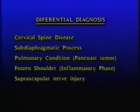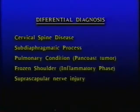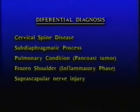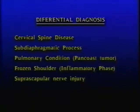Other conditions must be kept in mind as they may mimic the pain typically associated with rotator cuff disease. Cervical spine disease can refer pain down over the top of the shoulder. A sub-diaphragmatic process can refer pain to the top or back of the shoulder. A pulmonary condition such as a Pancoast tumor can also present as shoulder pain. A frozen shoulder, especially in the early inflammatory phase, can present with pain which mimics rotator cuff tear. Suprascapular nerve injury can present with weakness of the external rotators that suggest a rotator cuff tear.